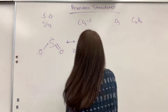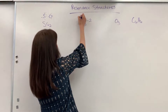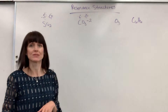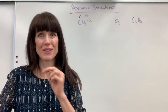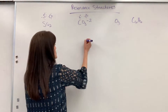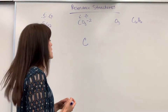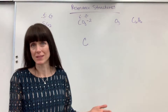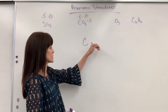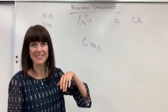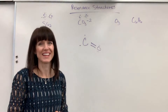Let's do a resonance structure with an ion — the carbonate ion, CO3^2-. Carbon has four valence electrons, oxygen has six valence electrons and we've got three of them. The minus two charge means we can add two electrons wherever we need them. Carbon is the central atom. I'm going to start by giving a double bond to one oxygen, using two of carbon's valence electrons, which leaves two valence electrons remaining on carbon.